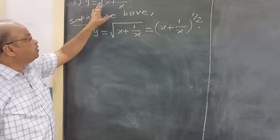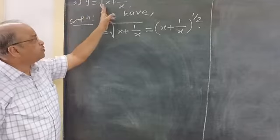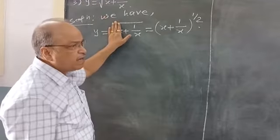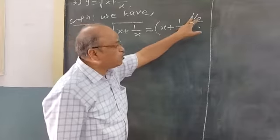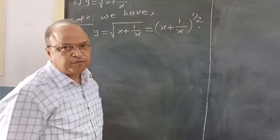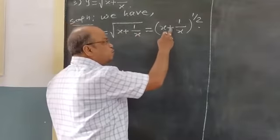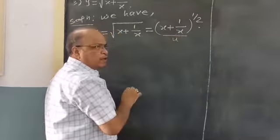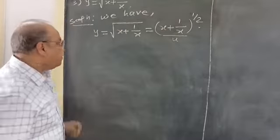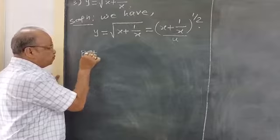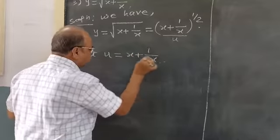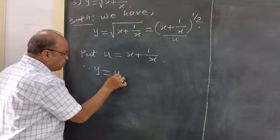Here the third example: y is equal to under root of (x + 1/x). First we simplify this function by removing the radical sign, raising the power of this complete factor by its reciprocal, that is 1 by 2. Therefore this function y becomes (x + 1/x) raised to the power 1 by 2. Again we reduce this into standard form by putting this bracket equal to u.